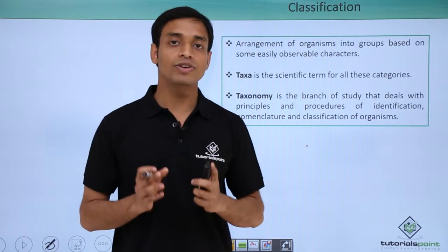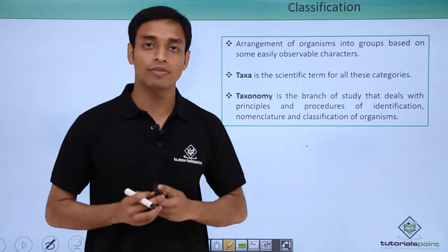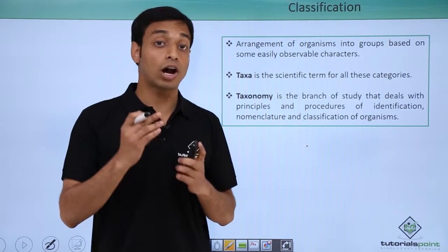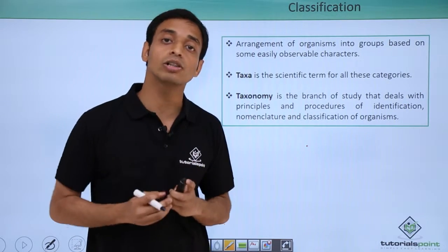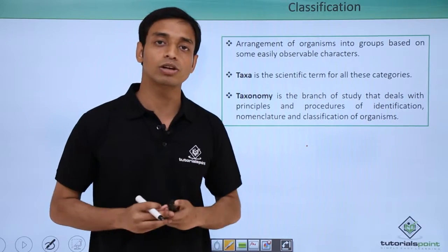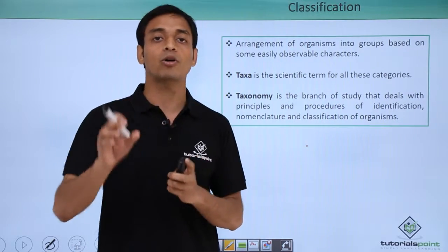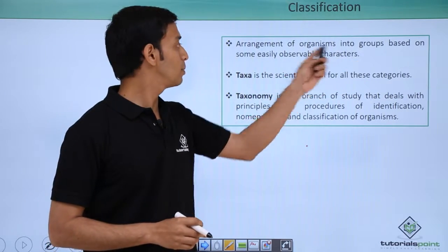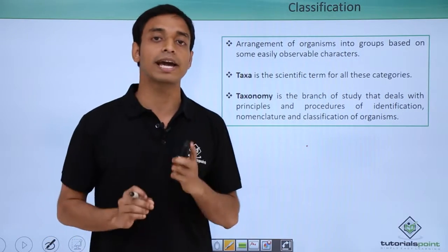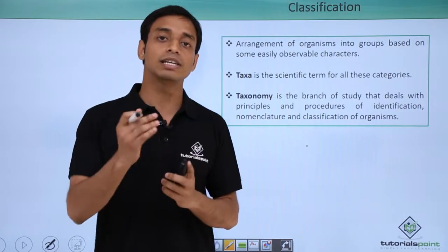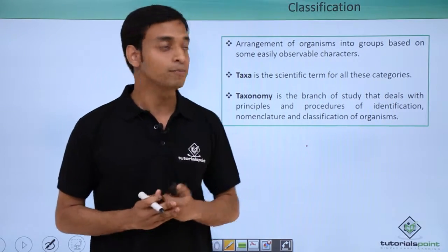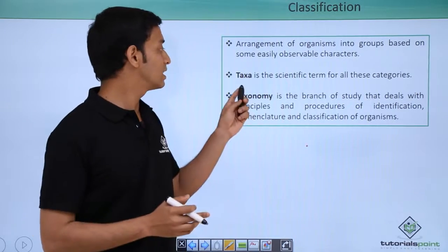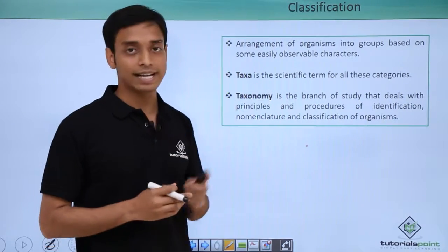Now let us talk about classification. Given the wide variety of organisms, we need to group or classify them in order to study them. Classification is the arrangement of organisms into groups based on easily observable characters, mostly morphological characters. Each of these categories or ranks is known as a taxon.